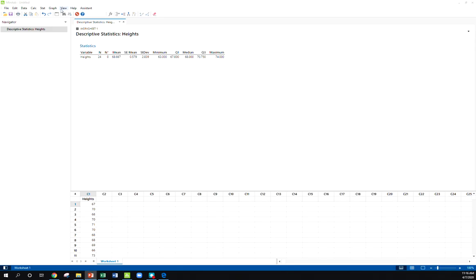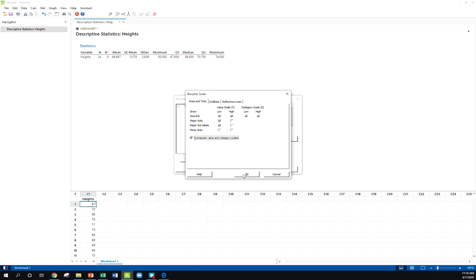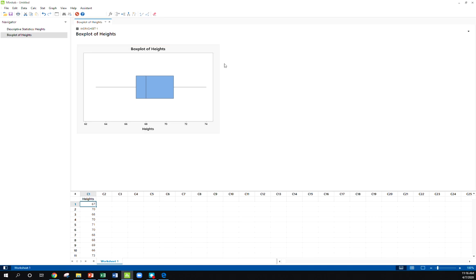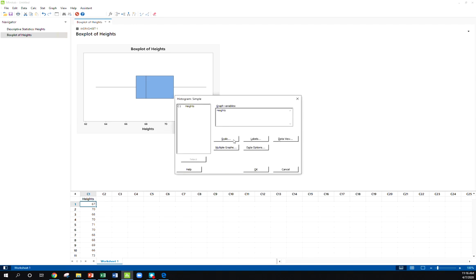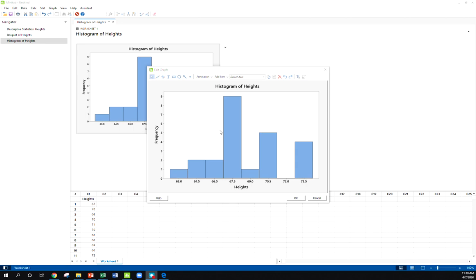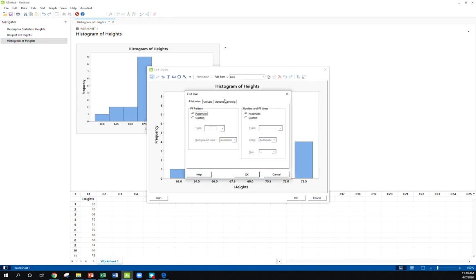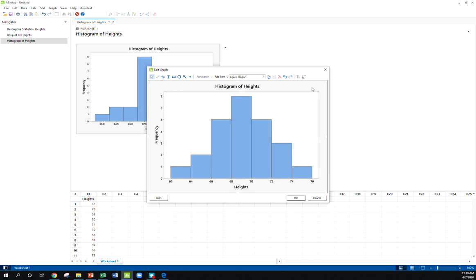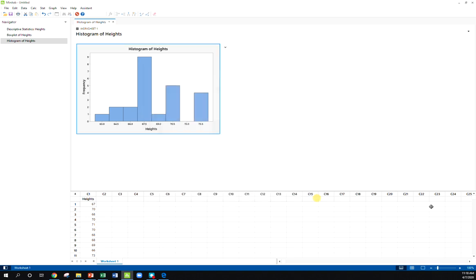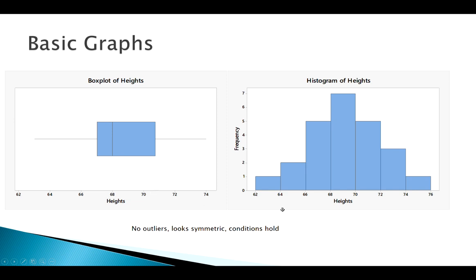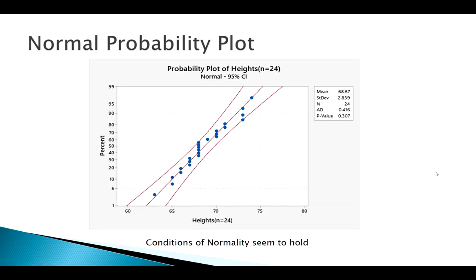To make a boxplot in Minitab, go to 1-way simple, put my heights in there. I like to click the transpose button to get a horizontal boxplot. Don't see outliers. For the histogram, let's use seven bins to get rid of that gap. I prefer cut points to midpoints. This histogram looks pretty good, looks pretty symmetric. No outliers, and there's my normal probability plot.